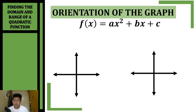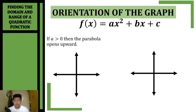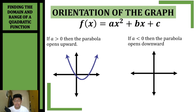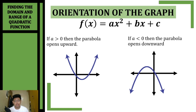The standard form of a quadratic function is f(x) = ax² + bx + c. To identify whether your parabola will open upwards or downwards, we look at the value of a. If a is greater than zero or positive, the parabola opens upwards. If a is negative or less than zero, the parabola opens downwards. By looking at the value of a — the numerical coefficient of x² — we can identify the orientation of the graph.